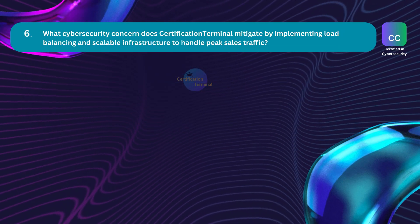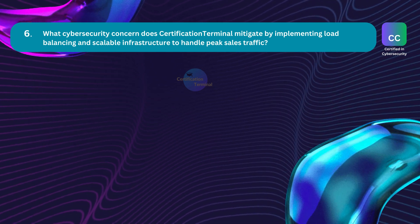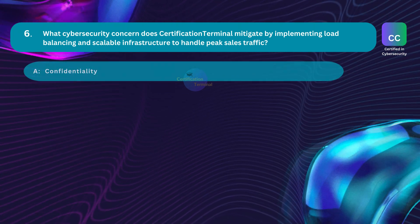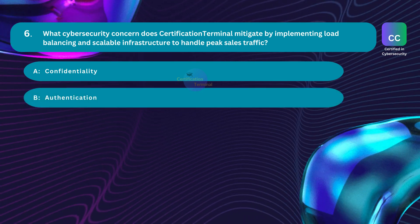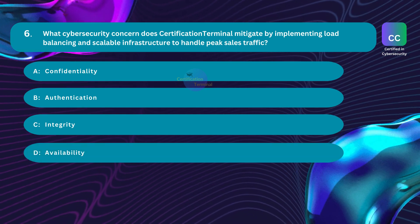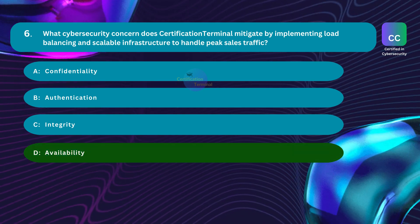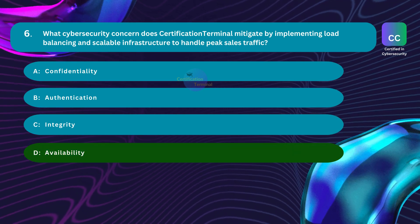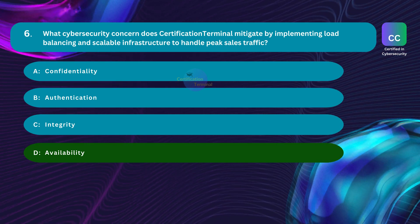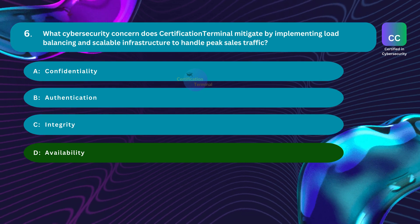Question number six: what cybersecurity concern does Certification Terminal mitigate by implementing load balancing and scalable infrastructure to handle peak sales traffic? Option A: confidentiality. Option B: authentication. Option C: integrity. Option D: availability. The correct answer is option D: availability. Certification Terminal is implementing load balancing and scalable infrastructure to handle peak traffic.